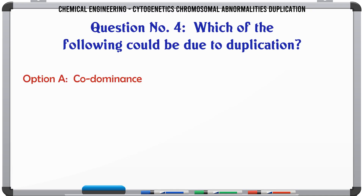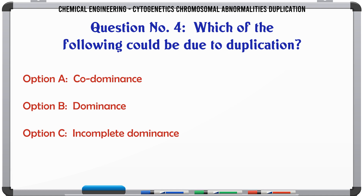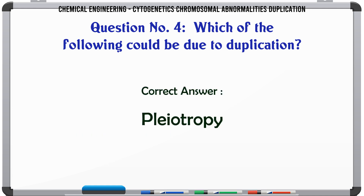Which of the following could be due to duplication? A: co-dominance. B: dominance. C: incomplete dominance. D: pleiotropy. The correct answer is pleiotropy.